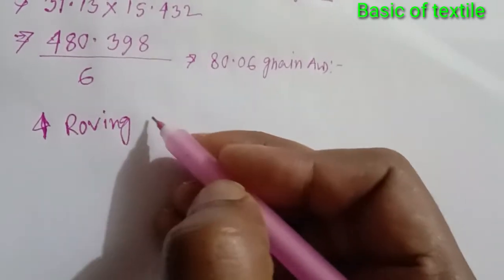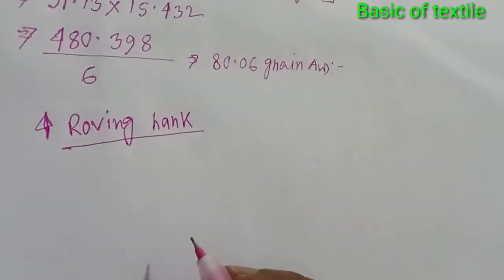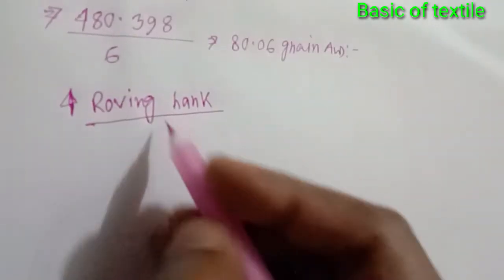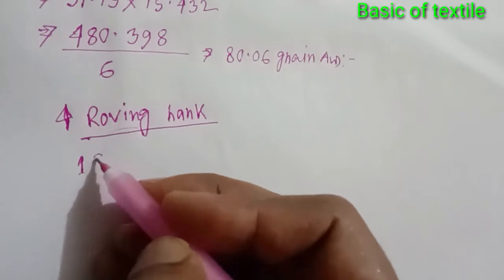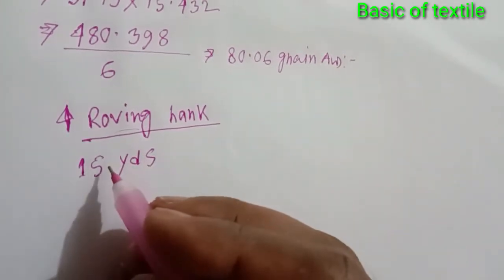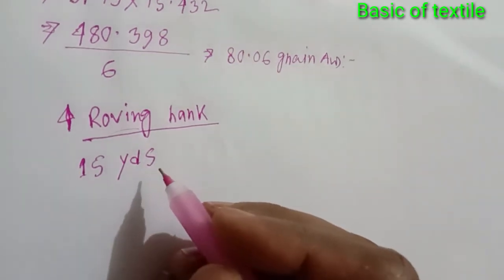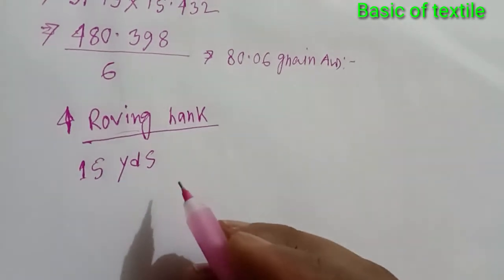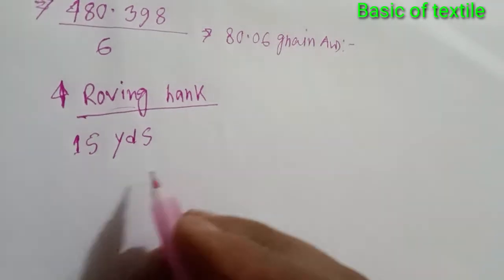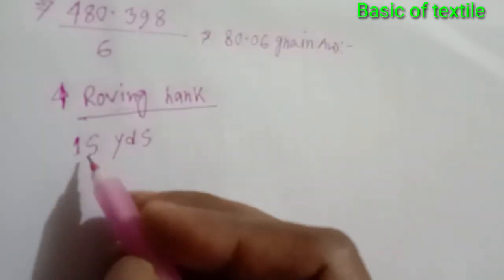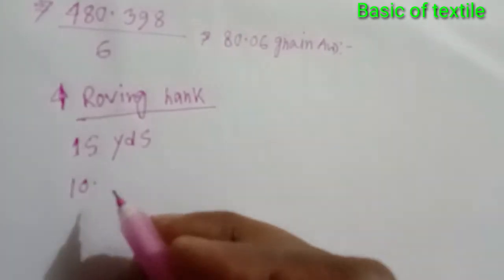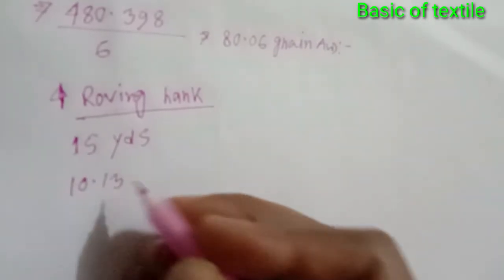Roving Hank. Roving Hank — yes. Robin into a way, we go to do the calculation. Suppose the number problem is 10.13 — Robin hank, wrap 15 yards. The water goes to the wall. Everyone, the number problem suppose is 10.13.